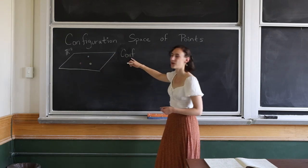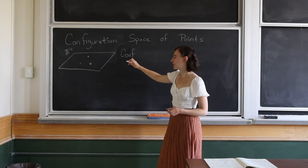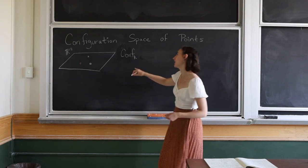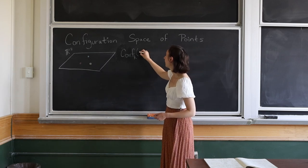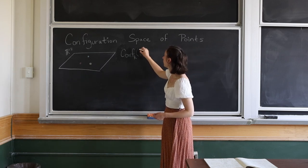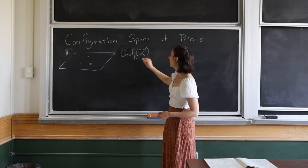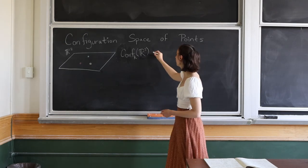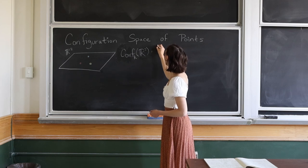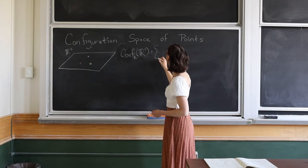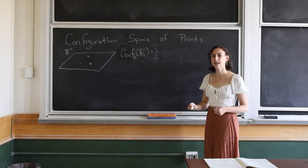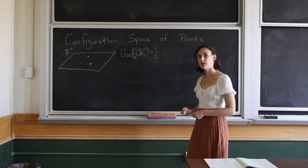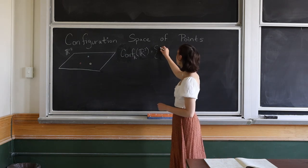We denote the space Conf, with K to indicate there are K points, and then R2 to say we're looking at points in R2. This space consists of all ordered K-tuples of points in R2, and we're concerned with all of the different possible configurations of these three points in the plane.